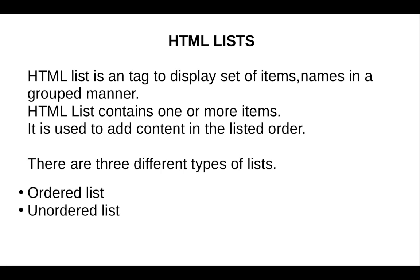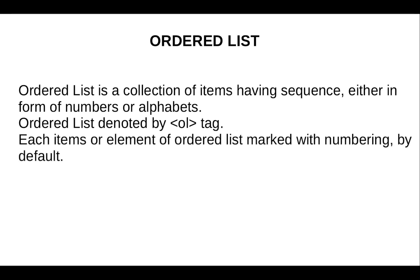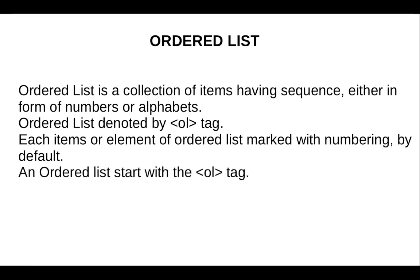There are three different types of lists: ordered list, unordered list, and definition list. An ordered list is a collection of items having a sequence either in the form of numbers or alphabets. It is denoted by the ol tag. Each item or element of the ordered list is marked with numbering by default.